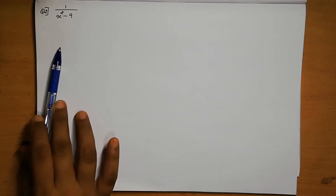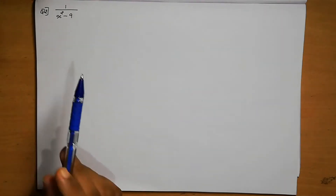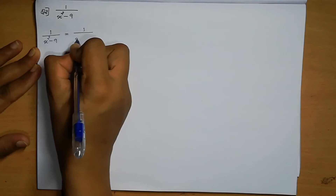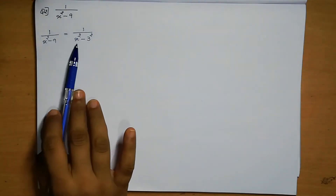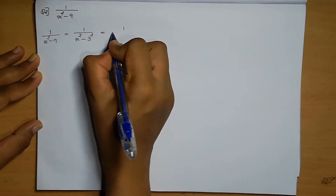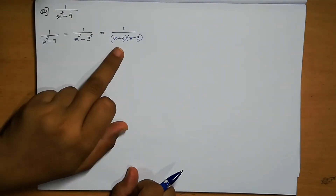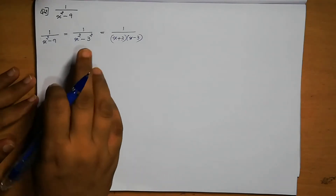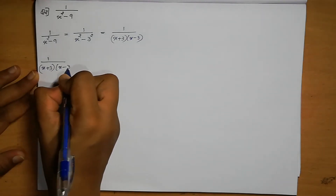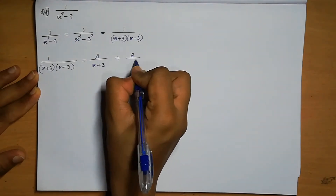Question number 2: 1 by (x² minus 9). We write x² minus 9 as x² minus 3², which is in the form a² minus b² equals (a plus b)(a minus b). So, 1 by (x² minus 9) equals 1 by (x plus 3) into (x minus 3). We write this as A by (x plus 3) plus B by (x minus 3).